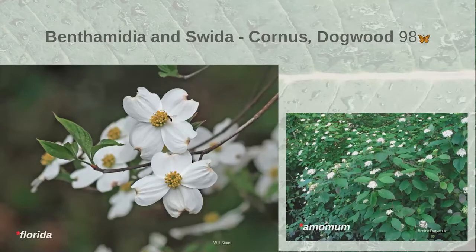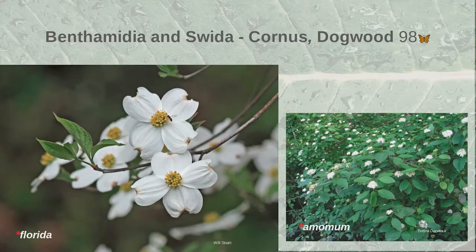Our state flower is no longer Cornus florida — they have broken up the Cornus genus, so our state flower is now Hamamelis florida... actually it's now in the genus Benthamidia, the flowering dogwood. It grows 15 to 33 feet in sun or part shade with medium moisture, but cannot tolerate drought at all because it is very shallow-rooted. The silky dogwood is now Swida amomum, growing 6 to 12 feet as a multiple-stemmed shrub in part shade to sun, liking medium to wet soil.